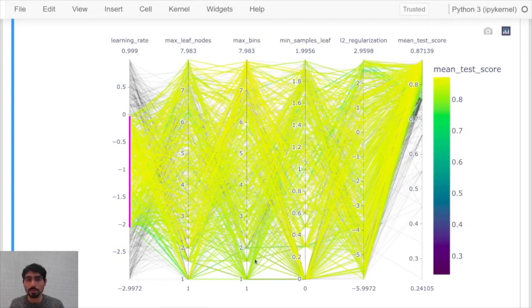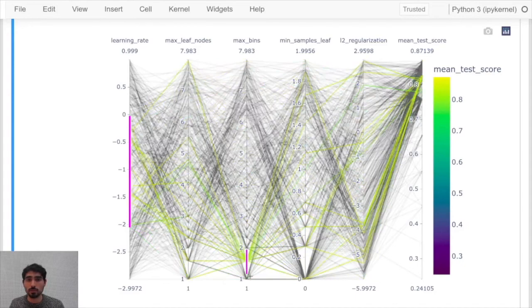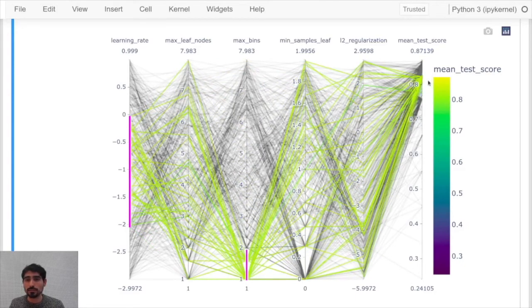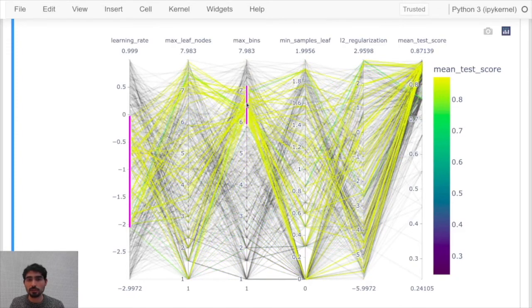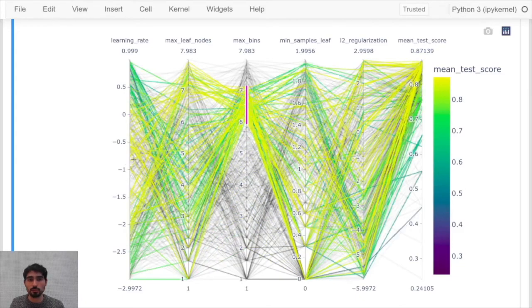But what happens if I also choose a small number of maximal bins? This will actually prevent our model to reach the highest scores. By doing so you can have an idea of how different parameters interact between each other.